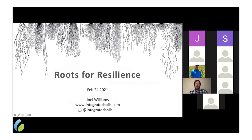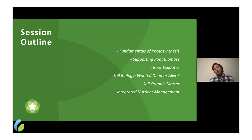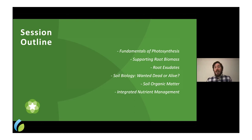We're going to touch on some of the fundamentals of photosynthesis and plant nutrition, and how we can optimize nutrition to drive photosynthesis — because that's what helps drive root biomass. Growing more roots ultimately means more food for the soil biology. We'll also touch on the role of root exudates and then move into some of the emerging evidence about soil organic matter — how microbes contribute to it — because we're going through a bit of a paradigm shift.